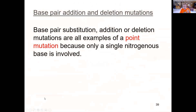In addition to base pair substitutions, we can talk about mutations referred to as base pair additions and base pair deletions. If we add a base pair to an existing DNA molecule, or delete a pair of nucleotides, that's going to have downstream effects on the protein ultimately produced. Because we're talking about a single addition or deletion, we sometimes call these point mutations — we're impacting just a single base pair.